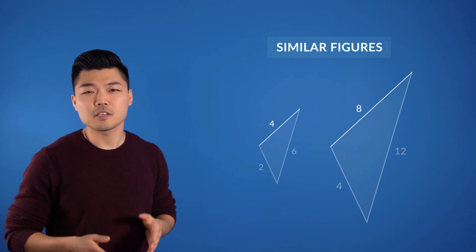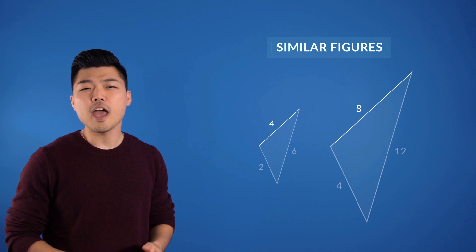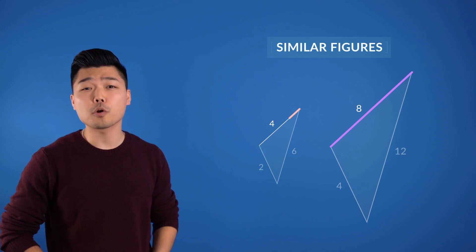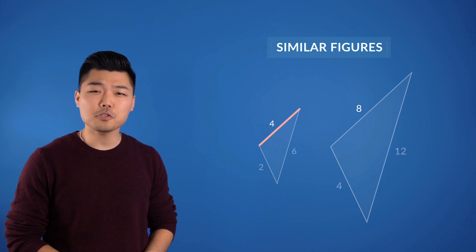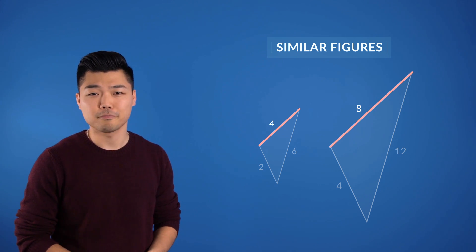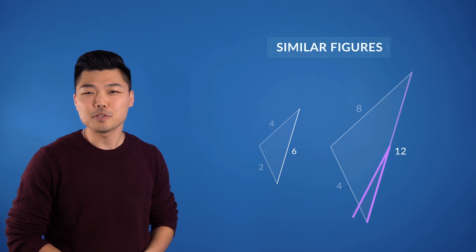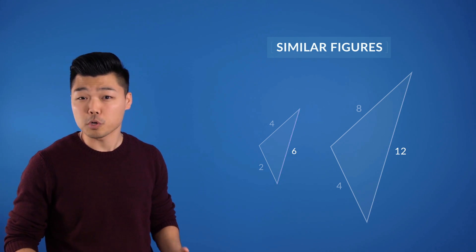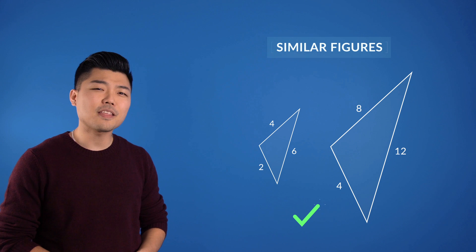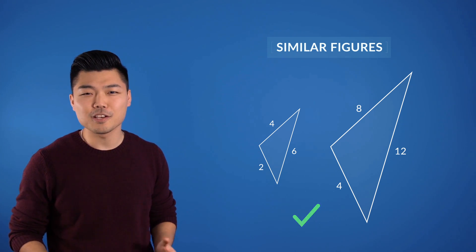we can check if it's a similar figure by seeing if every other side and their corresponding sides are also two times the length. After confirming that each side is indeed two times the length of its corresponding side, we can say that these two shapes are indeed similar figures.